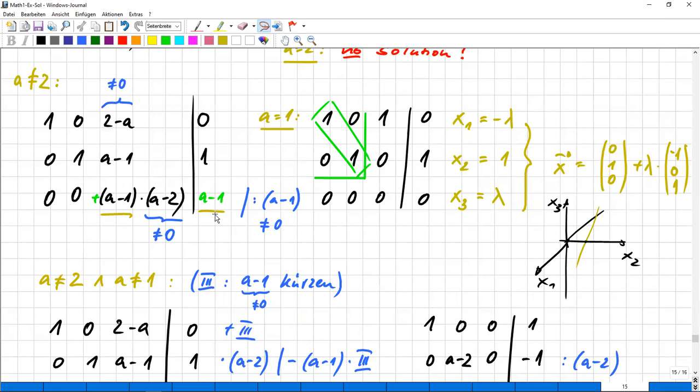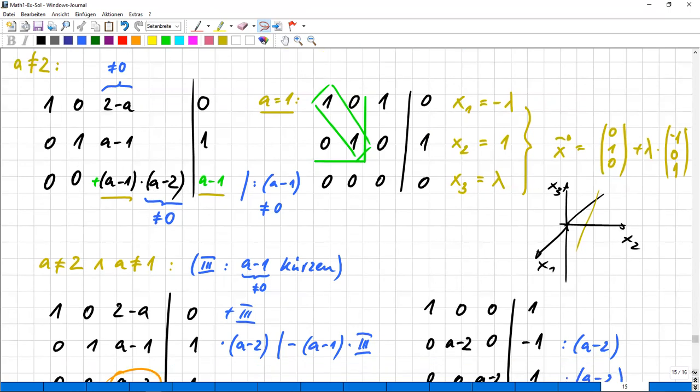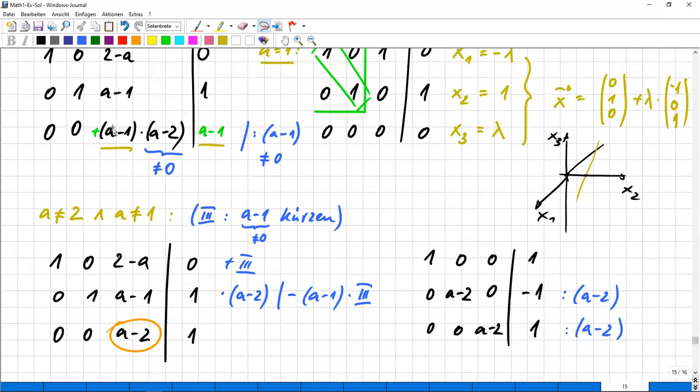So this is a number unequal zero here and here. And we can divide the whole row by this number. So it's gone. And that's a very big advantage. The only thing that remains, because otherwise we would have a quadratic expression of A, this is really not nice to have.